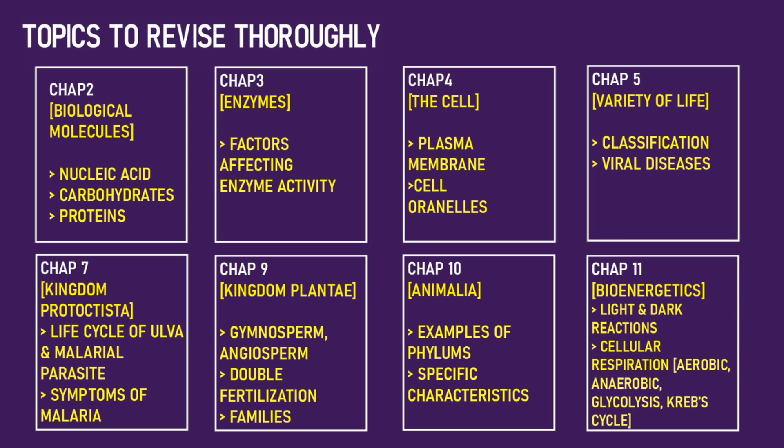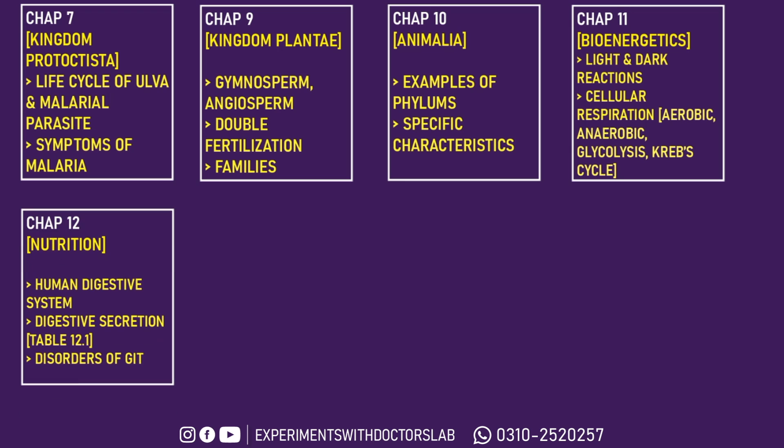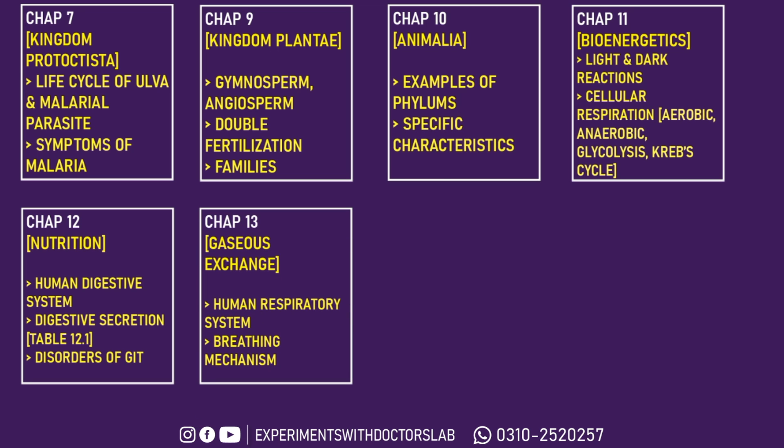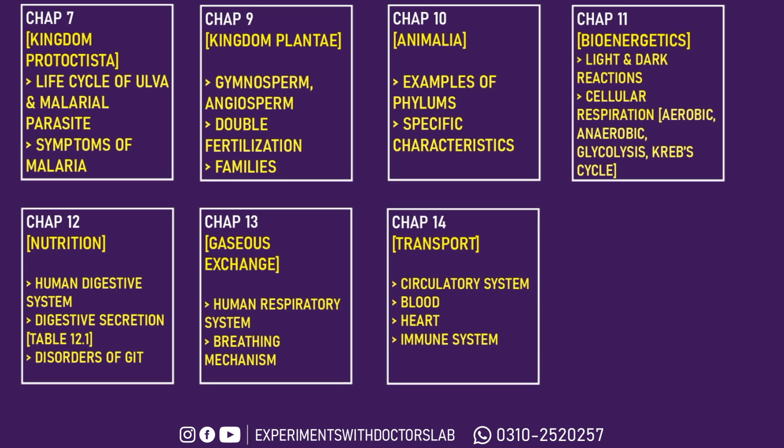Chapter 11, Bioenergetics — Light and Dark Reactions, Cellular Respiration, which includes aerobic respiration, anaerobic respiration, the process of glycolysis, and the Krebs cycle. Chapter 12, Nutrition — the important topics are the human digestive system, the digestive secretions, especially Table 12.1, and Disorders of the GIT. Chapter 13, Gaseous Exchange — Human Respiratory System and the Breathing Mechanism. Chapter 14, Transport — Circulatory System, Blood, Heart, and Immune System.